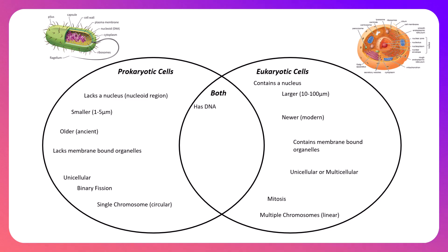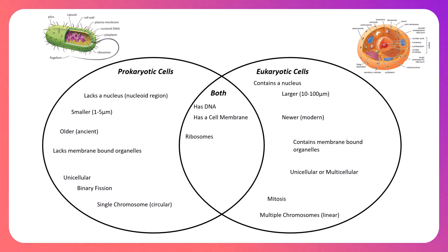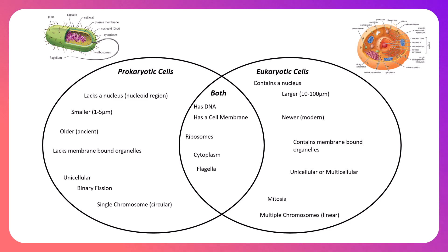What do prokaryotes and eukaryotes have in common? Both possess DNA — needed to reproduce and pass on genetic material. Both have a cell membrane, the phospholipid bilayer surrounding the cell. Both have ribosomes, since all cells need proteins. Both have cytoplasm, the semi-fluid liquid inside the cell. And both are capable of having flagella to propel themselves and allow movement, though not every cell has them.